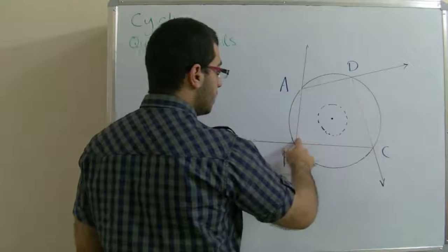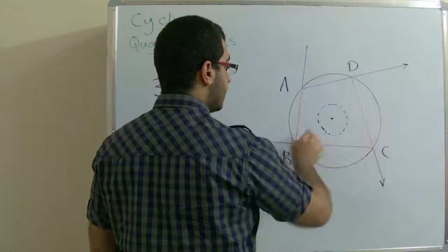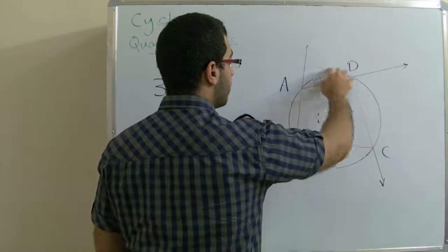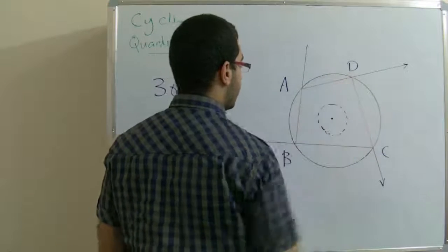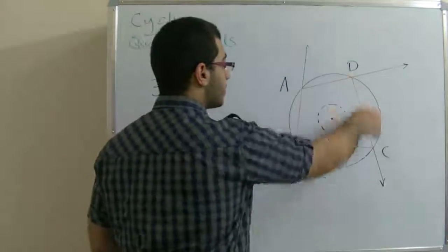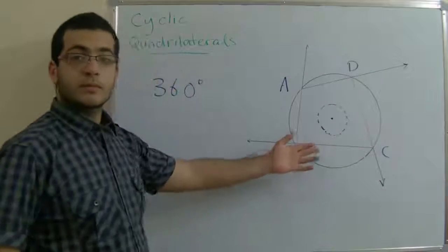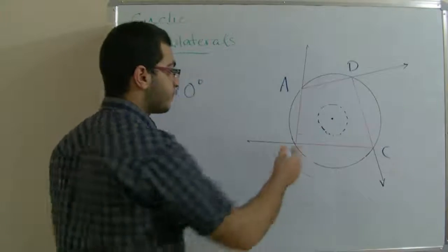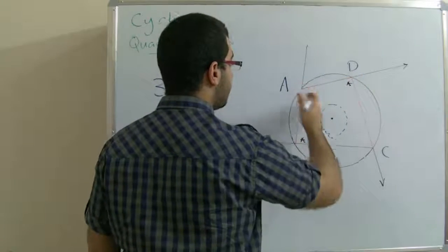The angle ABC is inscribed to the arc minor AC as it's subtended by this arc. As those two arcs together form the whole circle, the measure of those two angles is half 360.